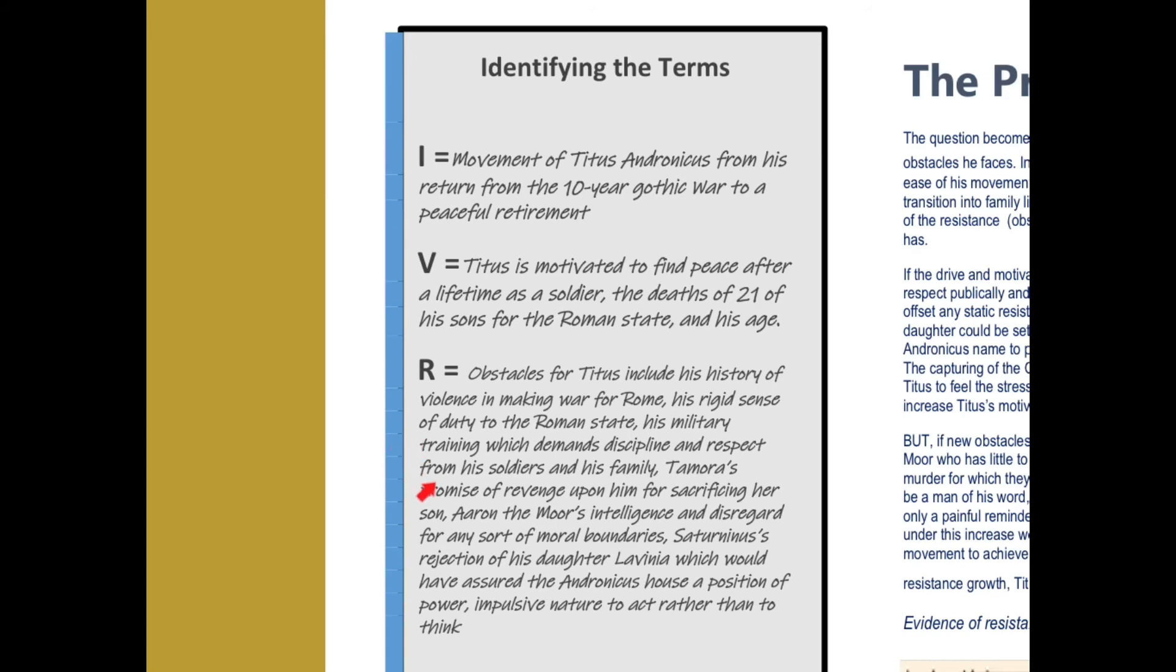You also have other outside people and forces like the Gothic Queen Tamora and her promise to revenge the death of her son upon him. You have Aaron the Moor who's also in the mix, and you can see even the Emperor Saturninus is working against him, and certainly what's done to his daughter Lavinia is also a resistance that's getting in the way of his peace.